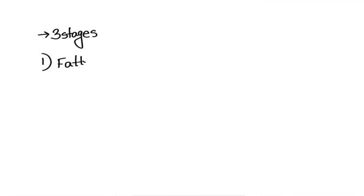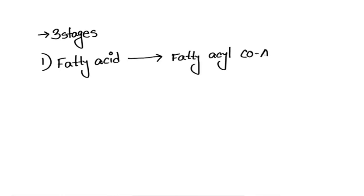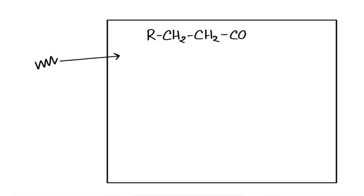There are mainly three steps of beta oxidation. First of all, fatty acid is activated into fatty acyl-CoA, which occurs in the cytoplasm. The second step is transport of activated fatty acyl-CoA into mitochondria by the carnitine shuttle pathway. The third step is beta oxidation proper, where the bond between alpha and beta carbon is broken down, and it occurs in the mitochondria.